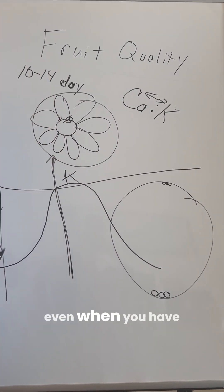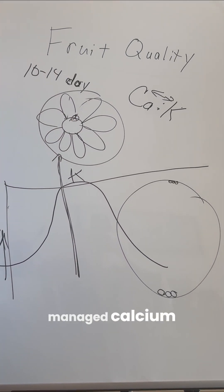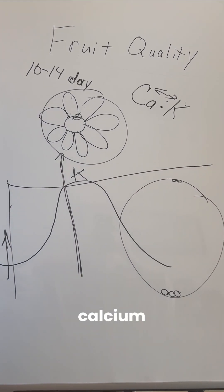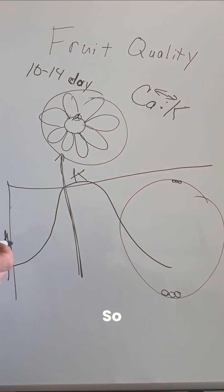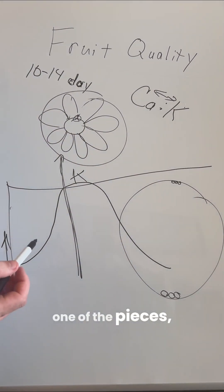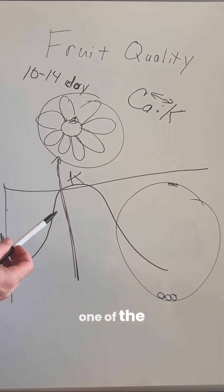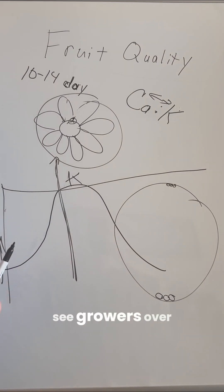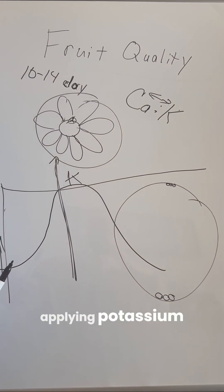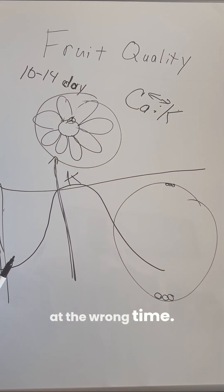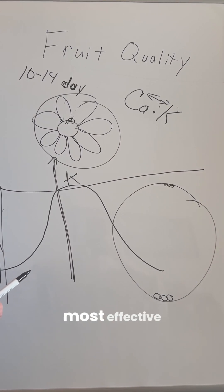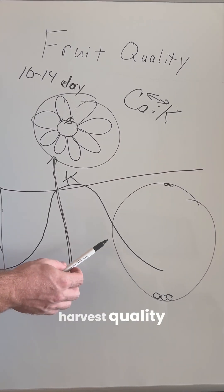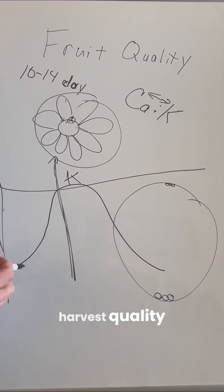Even when you have managed calcium well and put on proper potassium-calcium applications, one of the foundational challenges is that we see growers over-applying potassium at the wrong time. One of the most effective strategies for improving fruit quality and harvest quality is to address this timing issue.